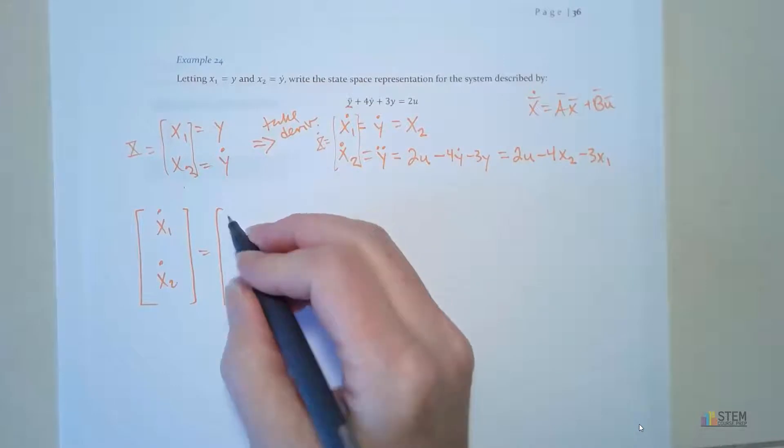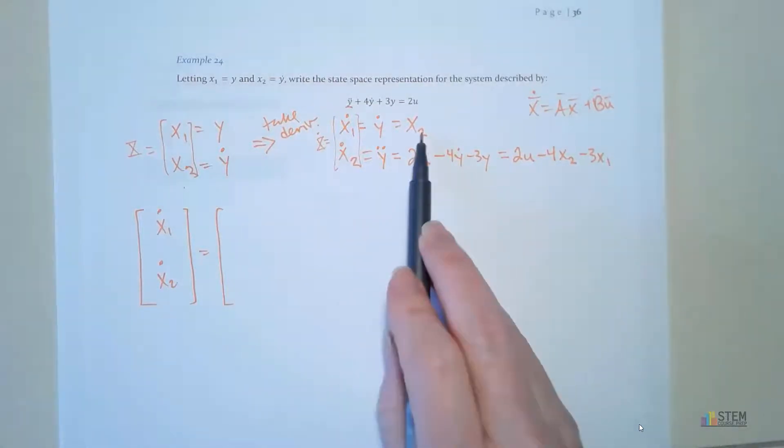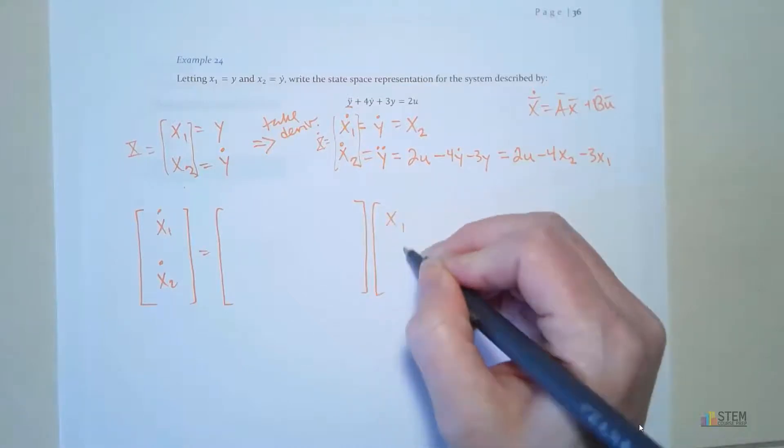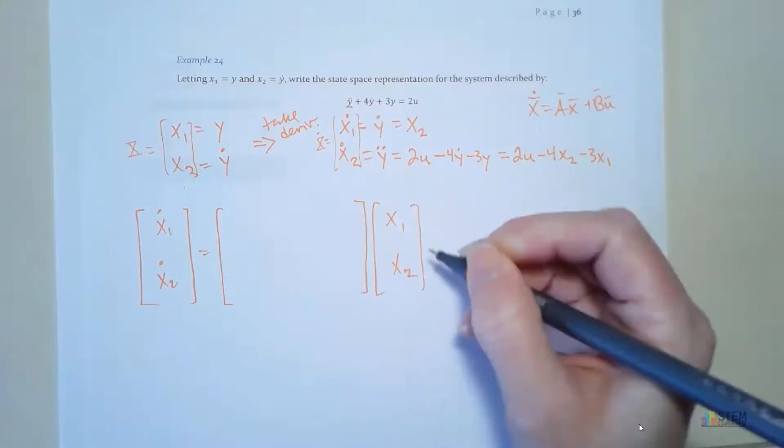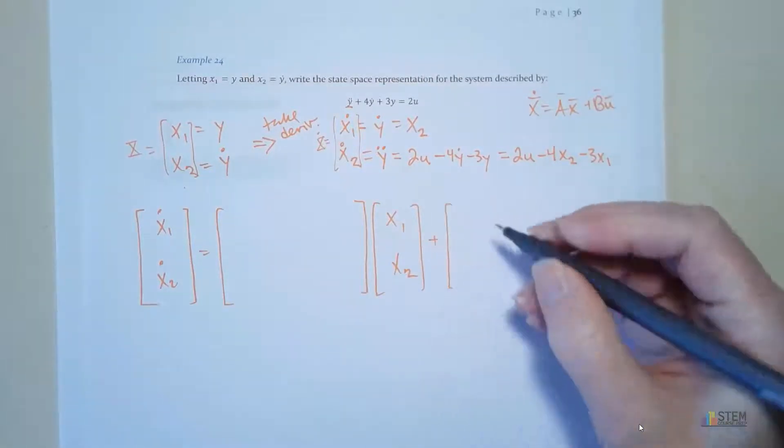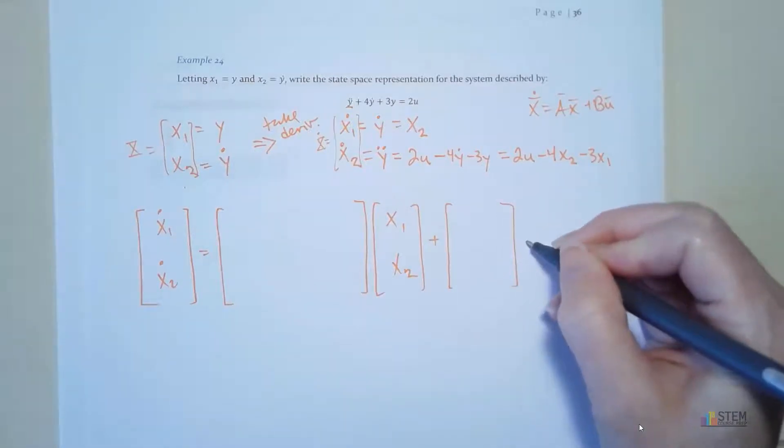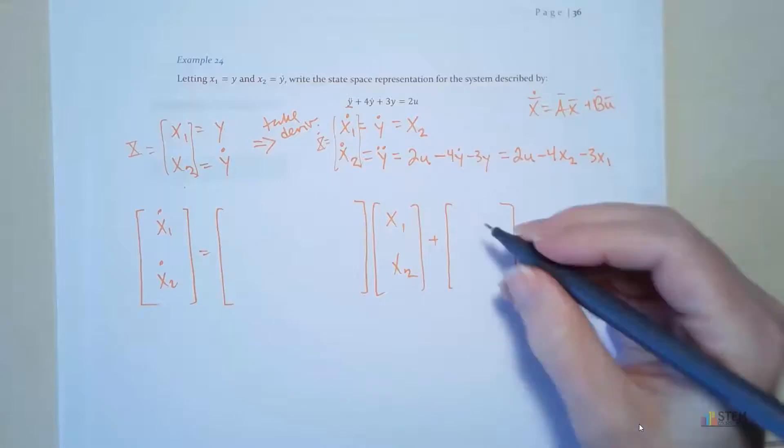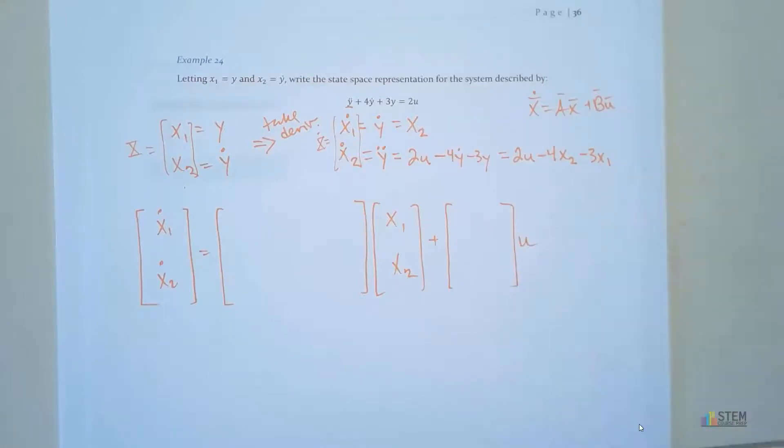So here, since we have just x2, let's figure out what we need. So here's A. Here's that x vector. And actually, let's go ahead and write out b. And then u. So u, in this case, is just going to be right here. So now we've got an outline. This might be easier.